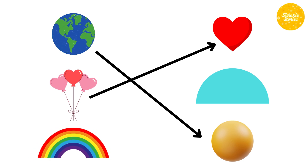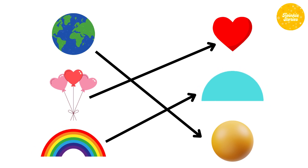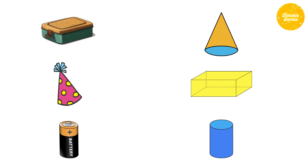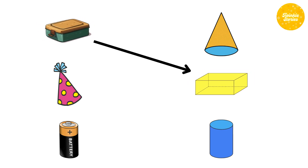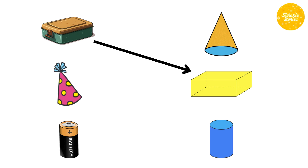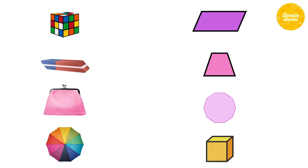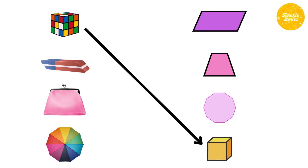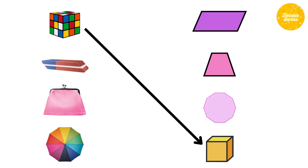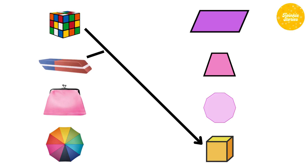Lunchbox is the example for cuboid. Birthday cap is the example for cone. Battery is the example for cylinder. Rubik's cube is the example for cube. Eraser is the example for parallelogram.